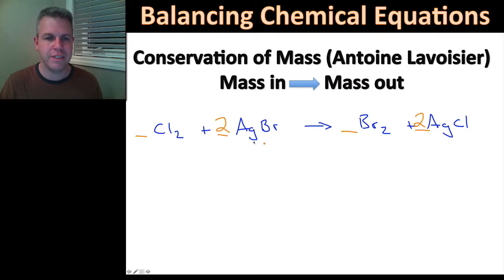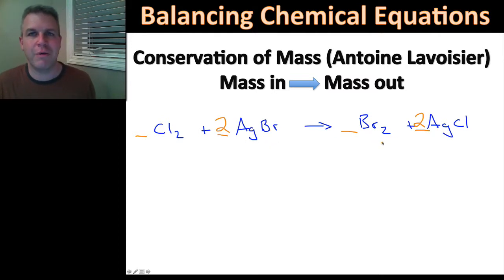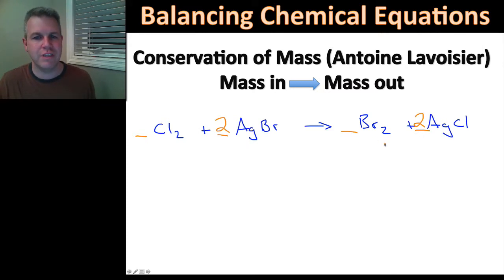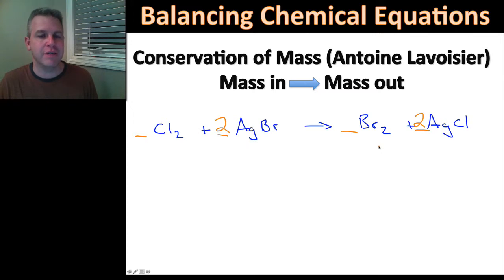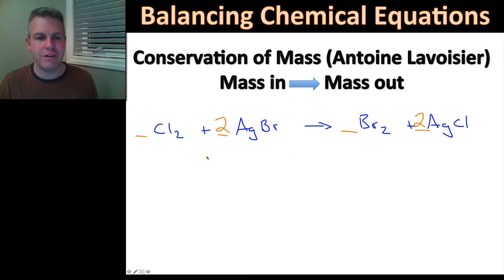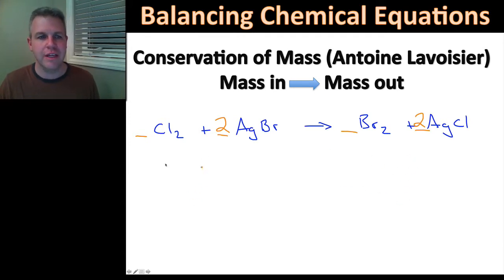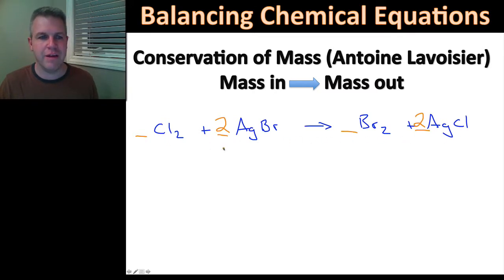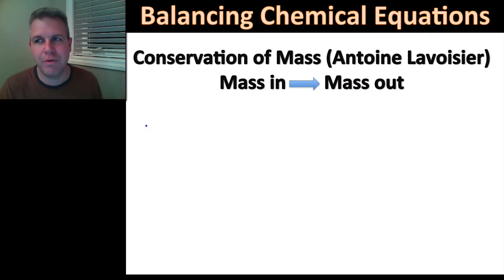I have two bromines on this side and two bromines on this side — it works out perfectly. This is quite often what happens: when you balance one thing, the other things become balanced. So this equation is now balanced.